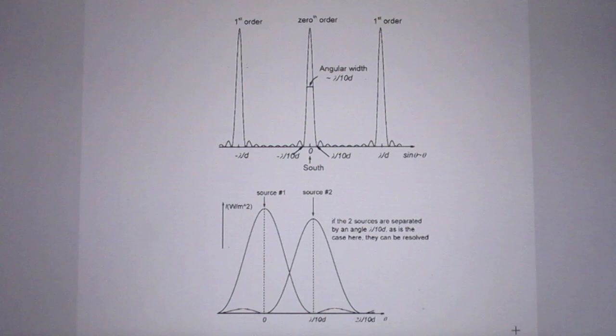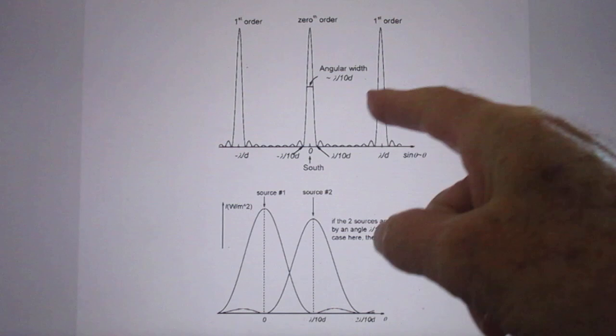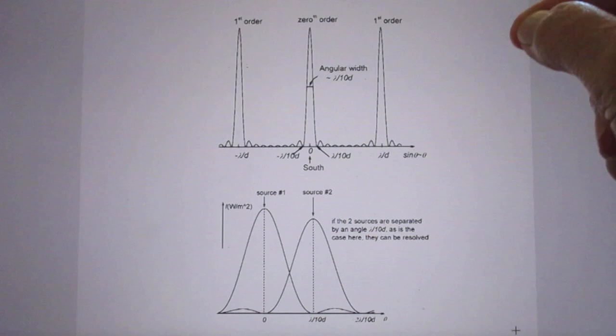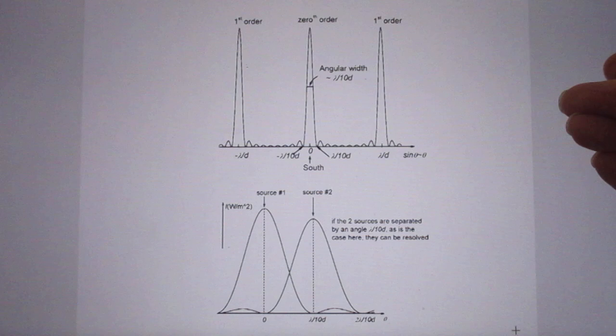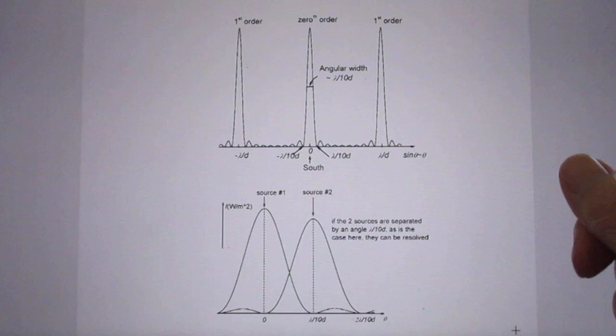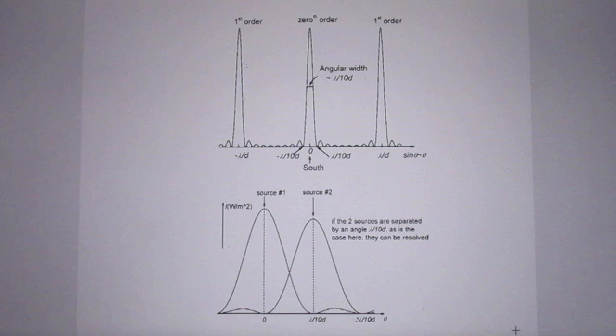If you had N telescopes, the number of zeros in between zero and first order would be N. In my lecture I show you an example for N equals 4. Here we have N equals 10. Therefore the width of each order becomes extremely narrow. The larger capital N, the larger the number of telescopes you have, the narrower it gets.